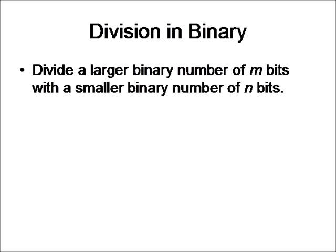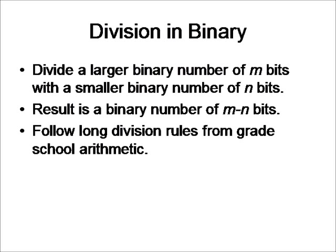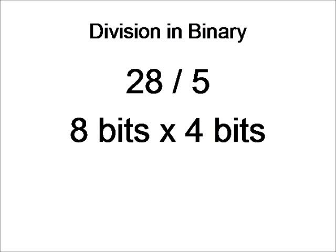In division in binary, what we want to do is divide a larger binary number of m bits with a smaller binary number of n bits. And the result will be a binary number of m minus n bits. Like with addition, subtraction, and multiplication, we just follow the same rules that we use from our grade school arithmetic. So let's take a look at a problem now.